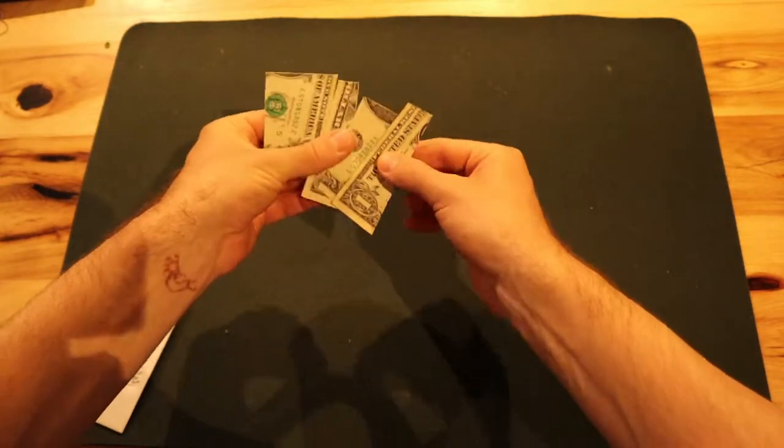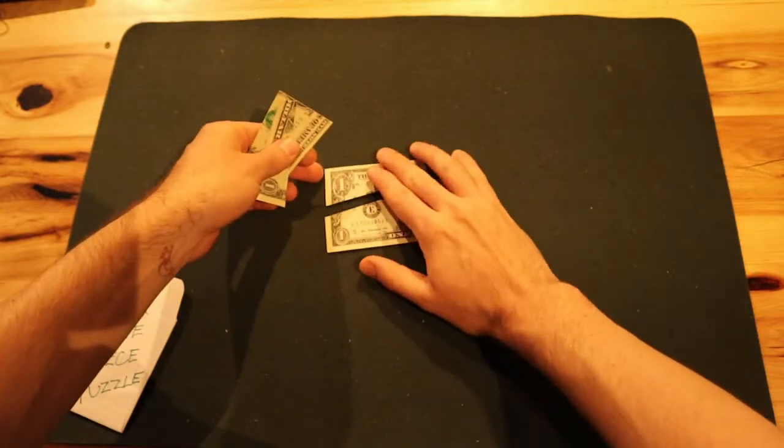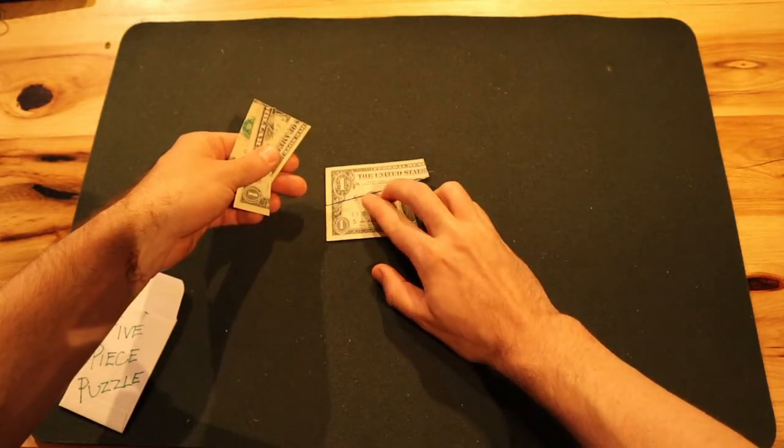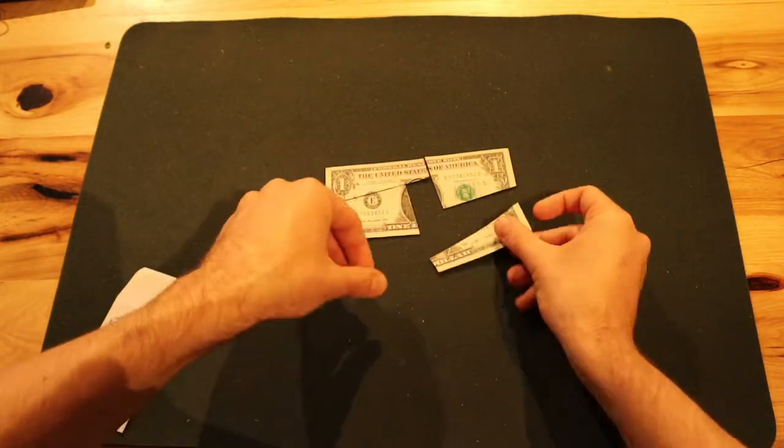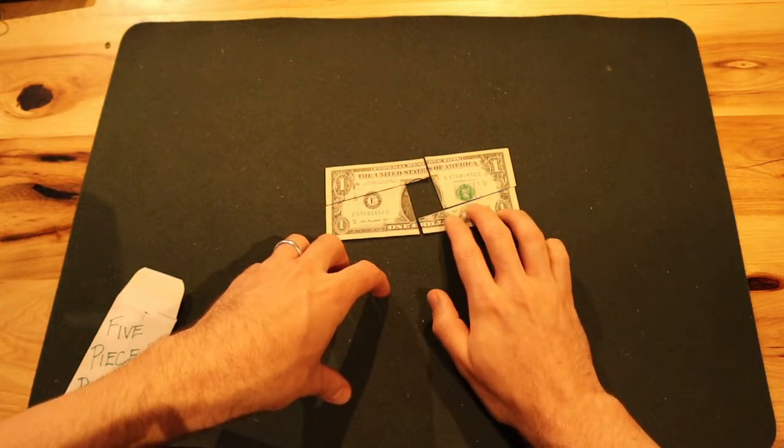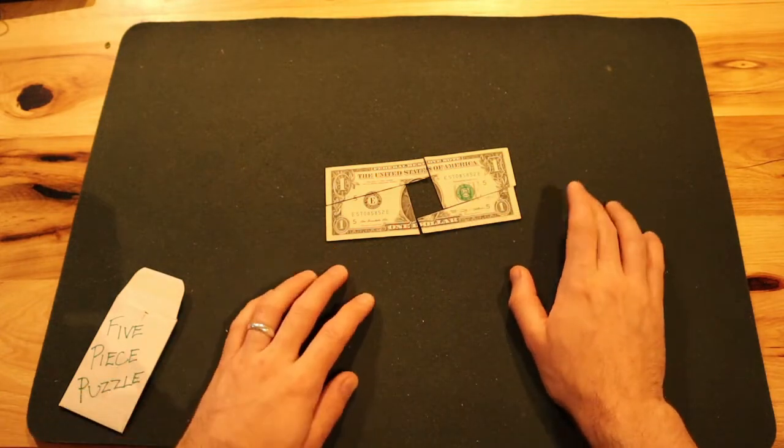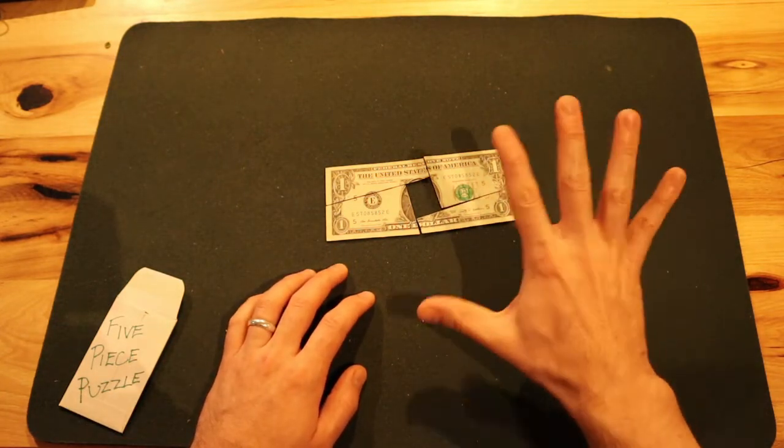I wanted to show you the puzzle on this side. Because you'll remember that on the other side it was a four-piece puzzle. But as these come together you'll see that this side is not a four-piece puzzle. This side is a five-piece puzzle.